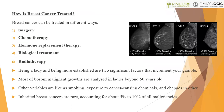How is breast cancer treated? Breast cancer can be treated in different ways, including surgery, chemotherapy, and radiotherapy. Being a woman and being older are two significant risk factors. Most breast cancers are diagnosed in women beyond 50 years old. Other risk factors include smoking, exposure to cancer-causing chemicals, and hormonal changes related to night shift employment. Inherited breast cancers account for about 5–10% of all malignancies, arising when gene mutations are passed from parent to child.